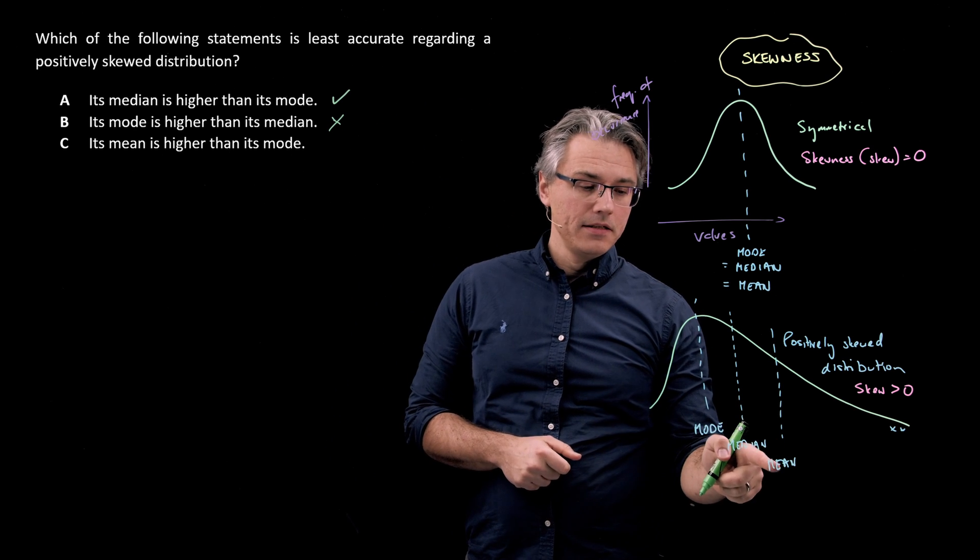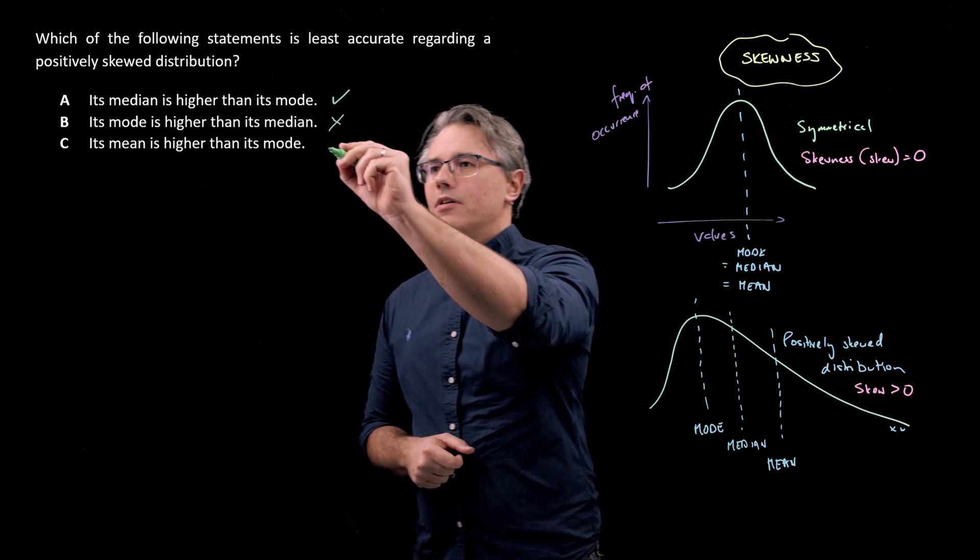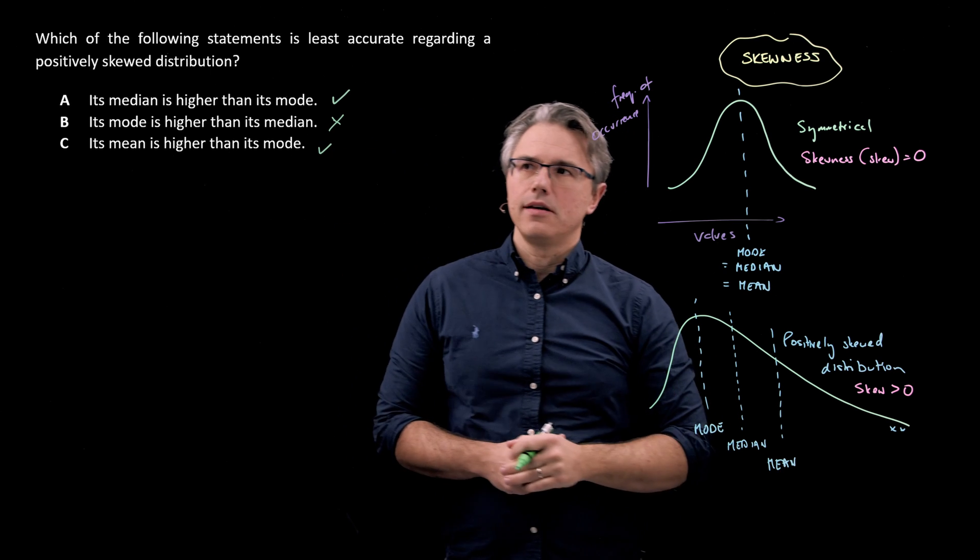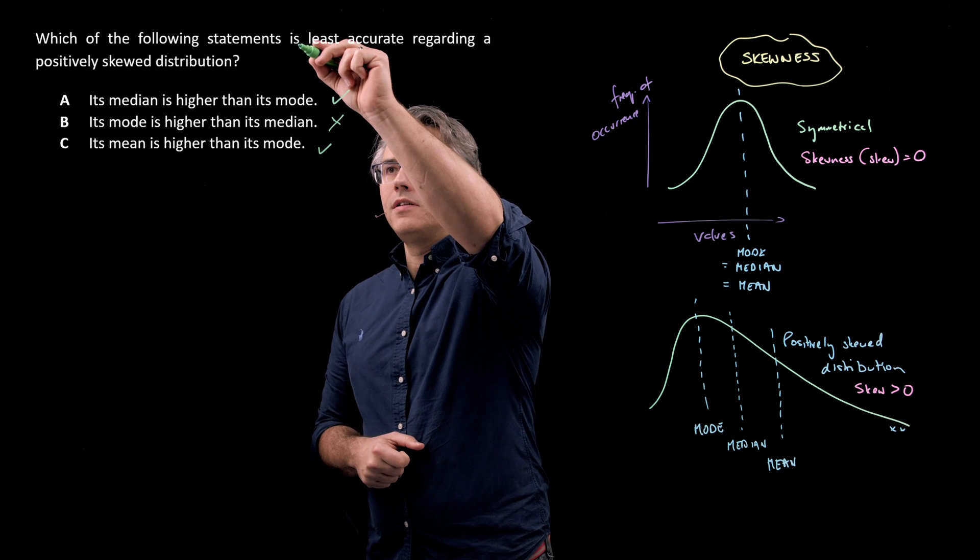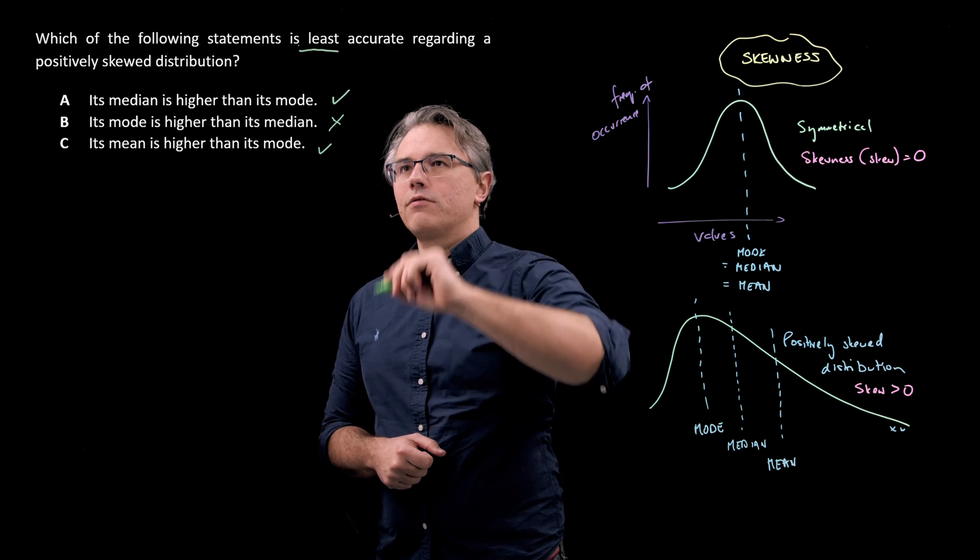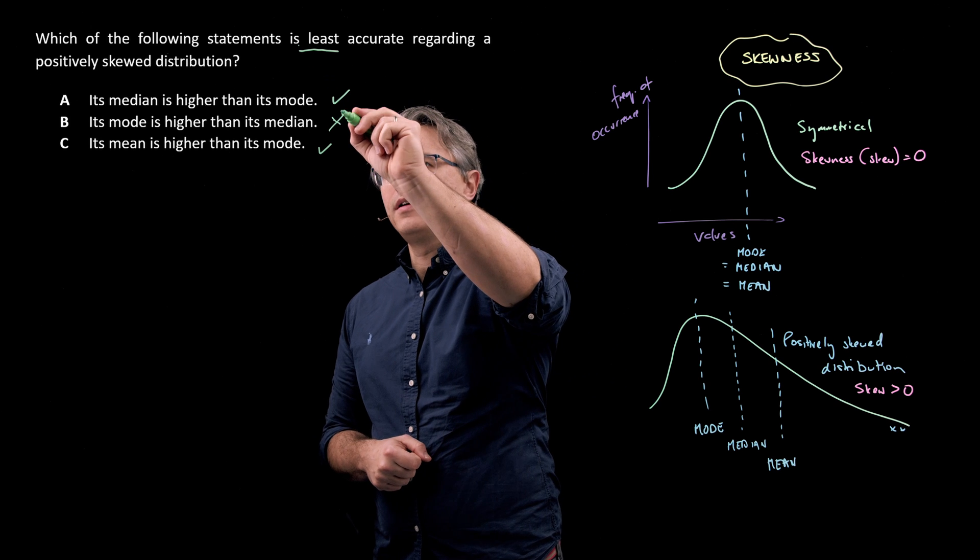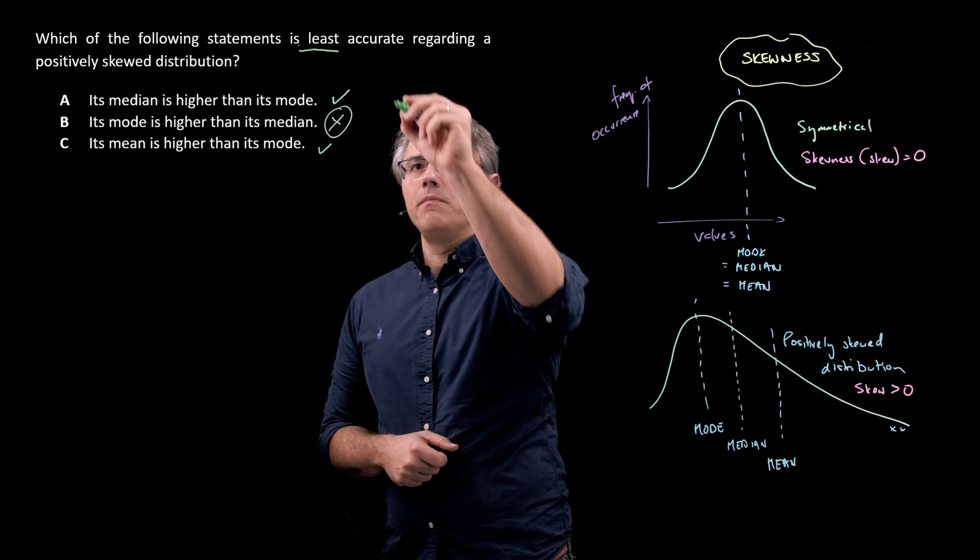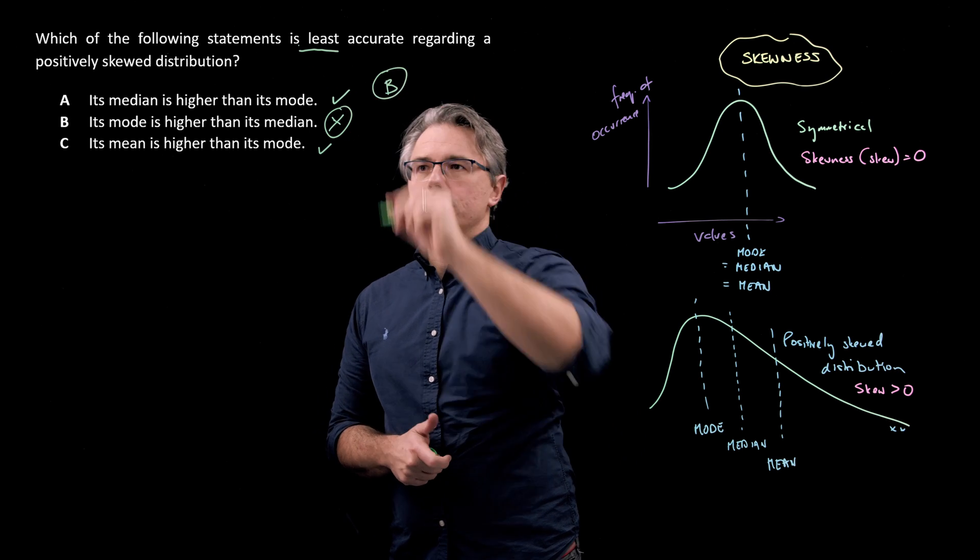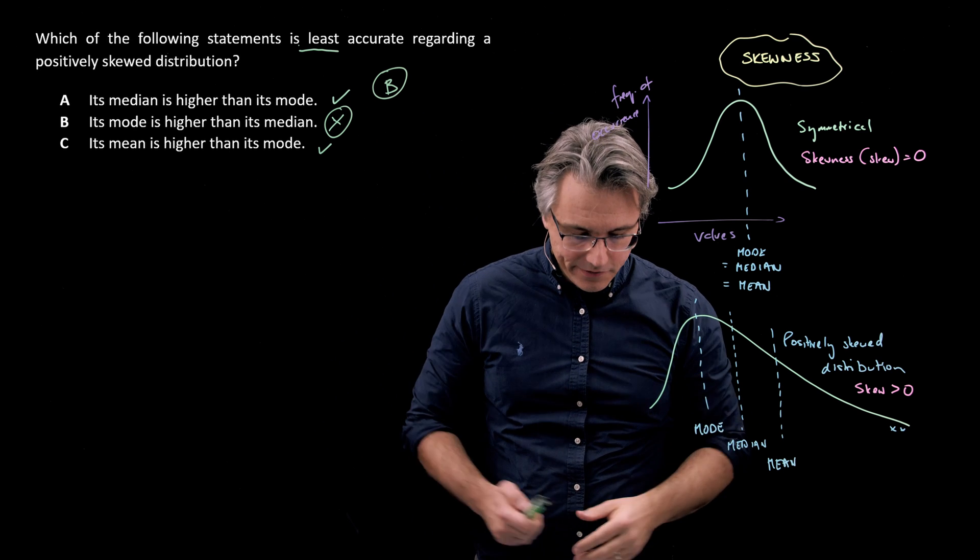And its mean is higher than its mode - that one is also fine. So we're asked to pick the one which is least likely accurate here, and that seems to be answer B, right? So B is going to be the solution to this question. Identified it. Brilliant.